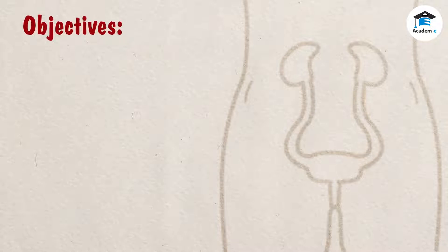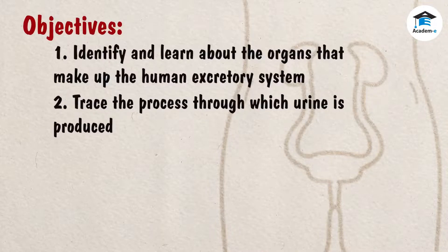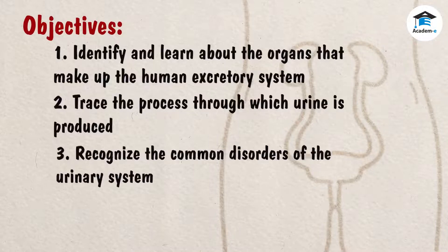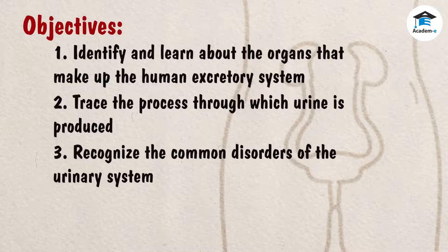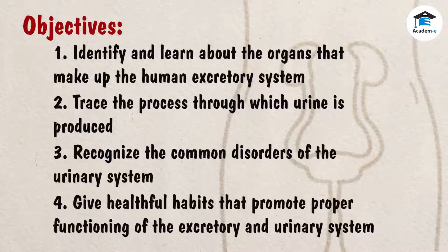Objectives. At the end of the lesson, you should be able to: 1. Identify and learn about the organs that make up the human excretory system. 2. Trace the process through which urine is produced. 3. Recognize the common disorders of the urinary system. 4. Give healthful habits that promote proper functioning of the excretory and urinary system.